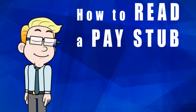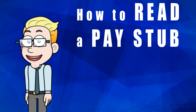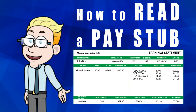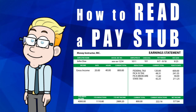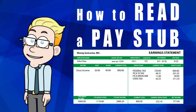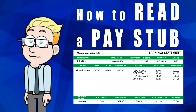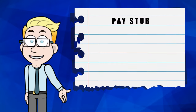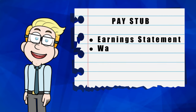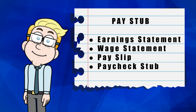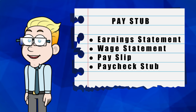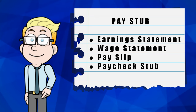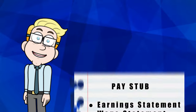How to read a pay stub. As a financial record of their payment, employees receive a pay stub. Although the pay stub may seem confusing, it doesn't have to be. This brief summary should help you understand it better. The pay stub may also be referred to as an earnings statement, wage statement, pay slip, or paycheck stub — they are all terms that refer to the same thing.